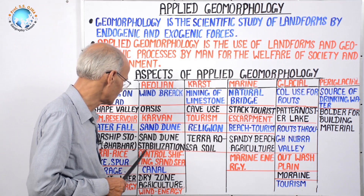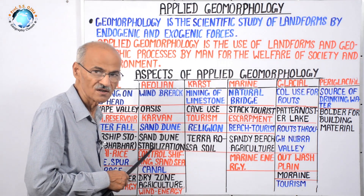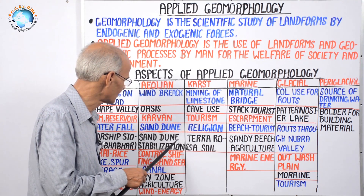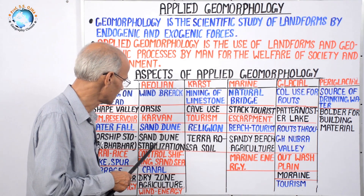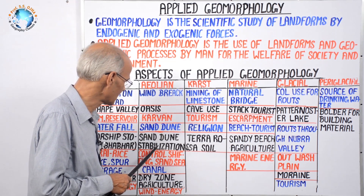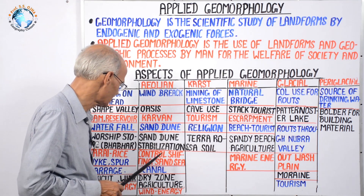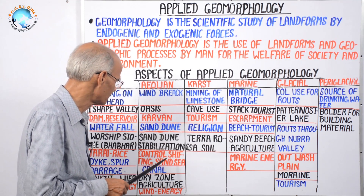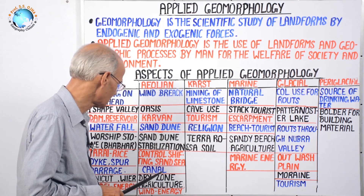Next is sand dune stabilization. Sand dunes are drifted by speedy winds, so stabilization can be done with the suggestion of arid and semi-arid geomorphologists through sprinkling irrigation, social forestry, and other measures. Sand shifting is being controlled by forestry and drip and sprinkling irrigation.